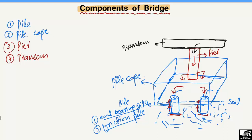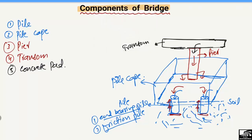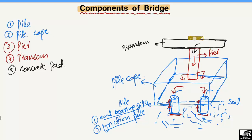After the construction of the transom, we come to the fifth part, which is known as the concrete plate. The concrete plates are mostly small in shape and are made of concrete only.